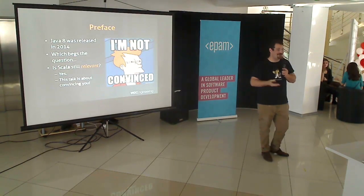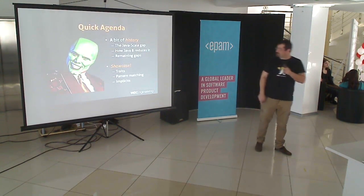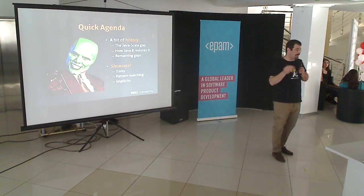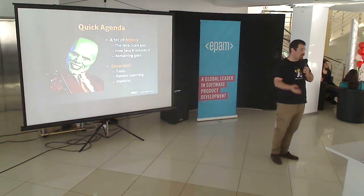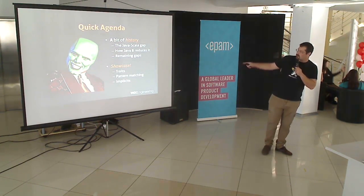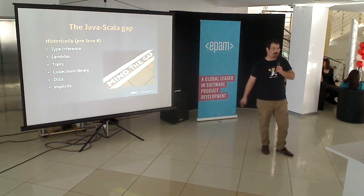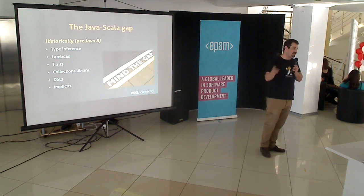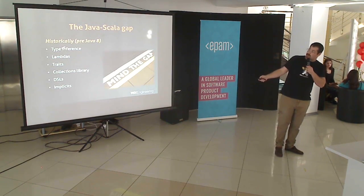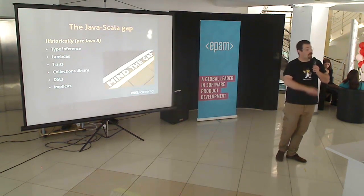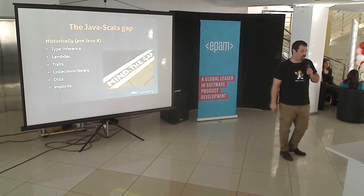A bit of history: we're going to cover the gaps between Java and Scala historically, talk about how Java 8 reduces that gap, and then showcase differences. Historically, Scala has this huge feature set that Java does not. In terms of Java 7 and below, you can reduce the discussion to six major features that Scala offers over Java: type inference, lambdas, traits, the collections library, DSLs, and implicits. There's a whole bunch of others like macros, but these are the six major selling points for pre-Java 8 developers. Java 8 added lambdas, the streams API — which is somewhat analogous to the collections library — and default method interfaces, which could be argued to remove the need for traits. It could be argued, because it's flat out wrong.